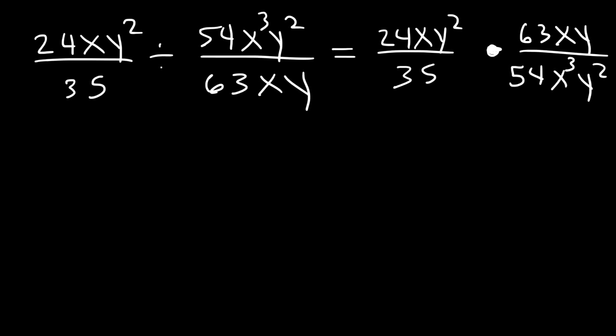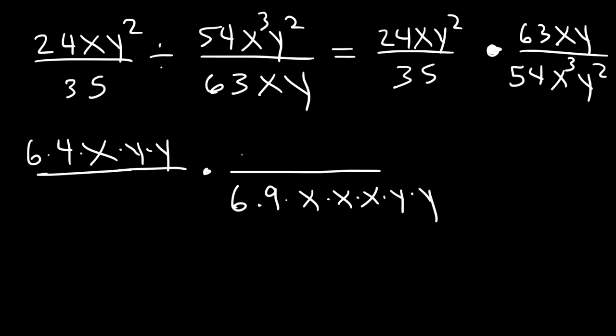Now 24, what numbers can we break down 24 into? Actually, let's use 6 because 54 is divisible by 6. I'm going to write 24 as 6 times 4. And then y squared, I'm going to break it down into y times y. So 54, I'm going to write it as 6 times 9. And x cubed, I'm going to expand it. And the same thing for y squared. 63 is 7 times 9. And 35 is 7 times 5. So when dealing with fractions and large numbers, I find it helpful to decompose these large numbers into smaller numbers.